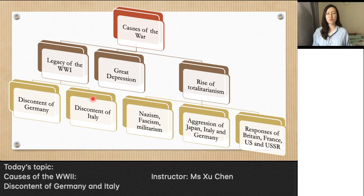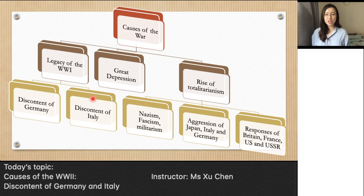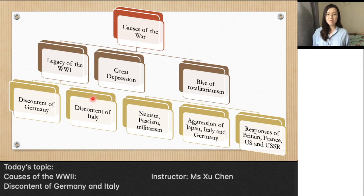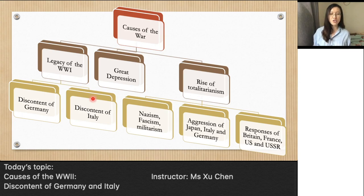After this, we'll talk about the Great Depression. Since the US was the largest market for world industry and also the largest creditor in the world, we need to understand why they went through a Great Depression in such a booming economy. Last but not least, we'll talk about the rise of totalitarianism — nazism, fascism, militarism — and the aggressions of Japan, Italy, and Germany, as well as the responses from Britain, France, the US, and the USSR.